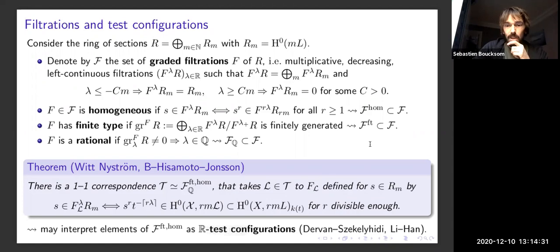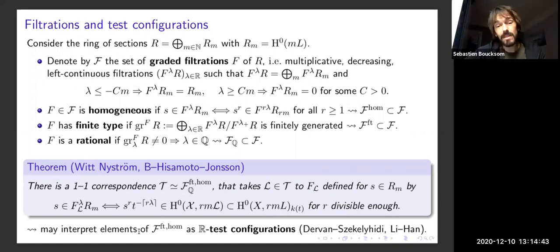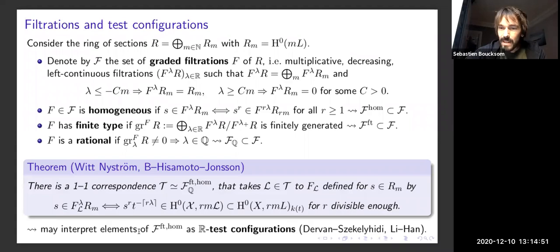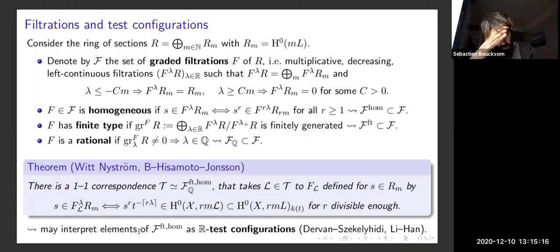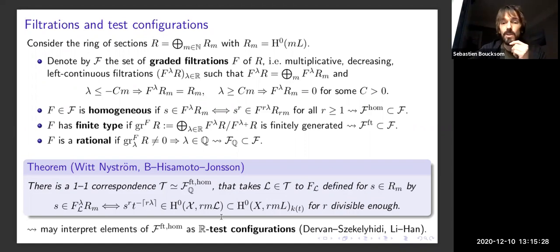If you drop the rationality requirement, looking at filtrations that are finitely generated and homogeneous but possibly irrational, this is more or less exactly what Dervan, Székelyhidi, and also Chilli and Han have called a real test configuration — a sort of irrational test configuration. These show up when people look at optimal destabilizing test configurations or study the asymptotic behavior of the Kähler–Ricci flow, originating in work of Chen, Sun, and Wang on the Kähler–Ricci flow in the Fano case.